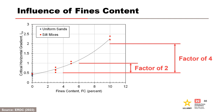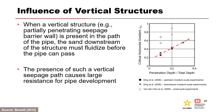Research investigated the influence of fines on the critical horizontal gradient. At a fines content of 5%, the critical horizontal gradient is doubled; at a fines content of 10%, it is quadrupled—a significant influence with major implications for risk assessments. When a vertical structure such as a partially penetrating seepage barrier wall is present in the path of the pipe, the sand downstream must fluidize before the pipe can pass, causing large resistance for pipe development. The overall gradient required to pass such a structure is usually higher than gradients required for initiation and progression without the structure, and a chart can be used to assess the effect on the critical gradient.